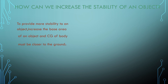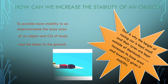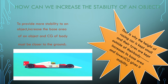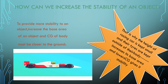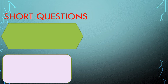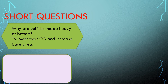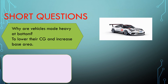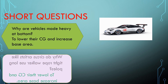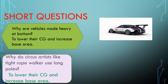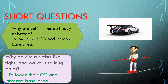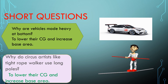To increase the stability of an object, we must increase its base area and keep the center of gravity as close to the ground as possible. This explains why the height of a racing car is kept small and the tires are kept outside the body — these factors increase the base area and lower the center of gravity, providing more stability. Racing cars are made heavy at the bottom and their height is kept to a minimum. Circus artists such as tightrope walkers use long poles to lower their center of mass, preventing them from toppling over.